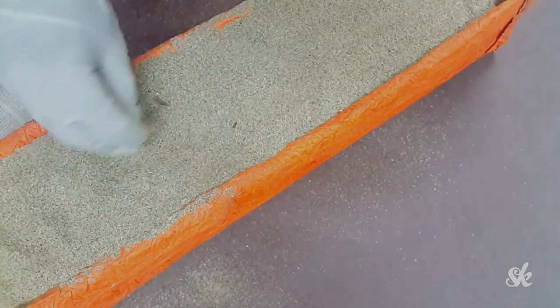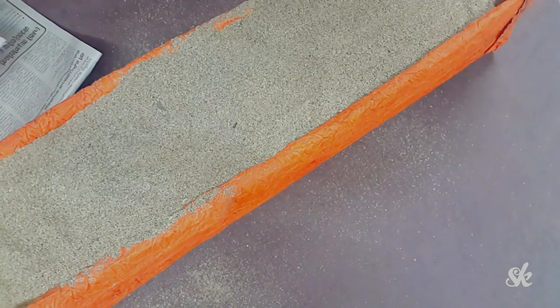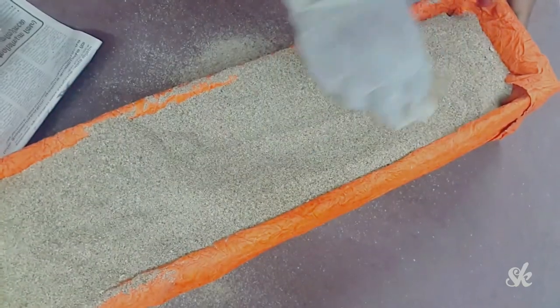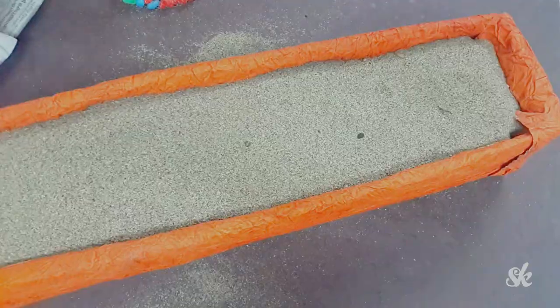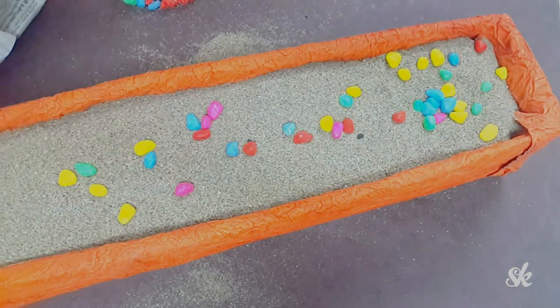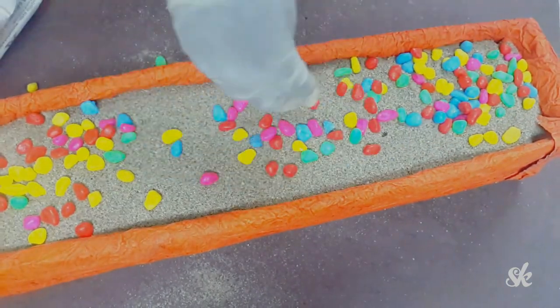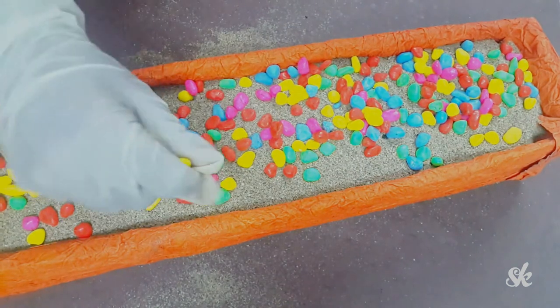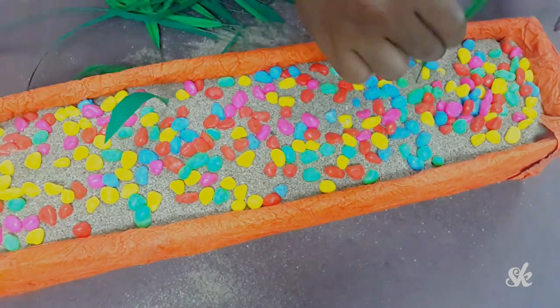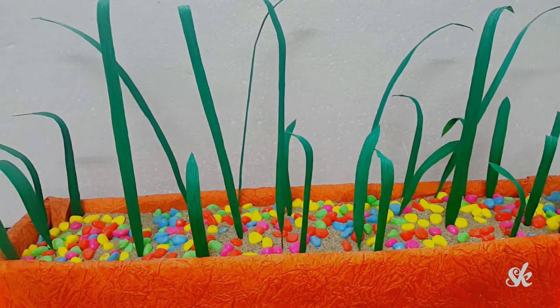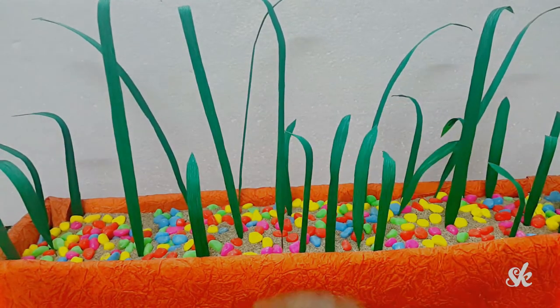Once finished, do little ornamentation if needed using colorful pebbles like I did. Now adding life to our flower pot: first plant the leaves, then the flowers. Anyways, there are no rules.